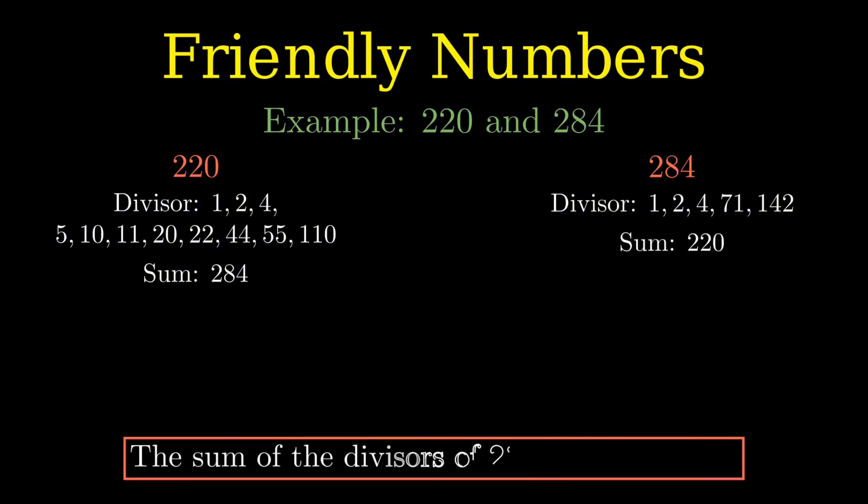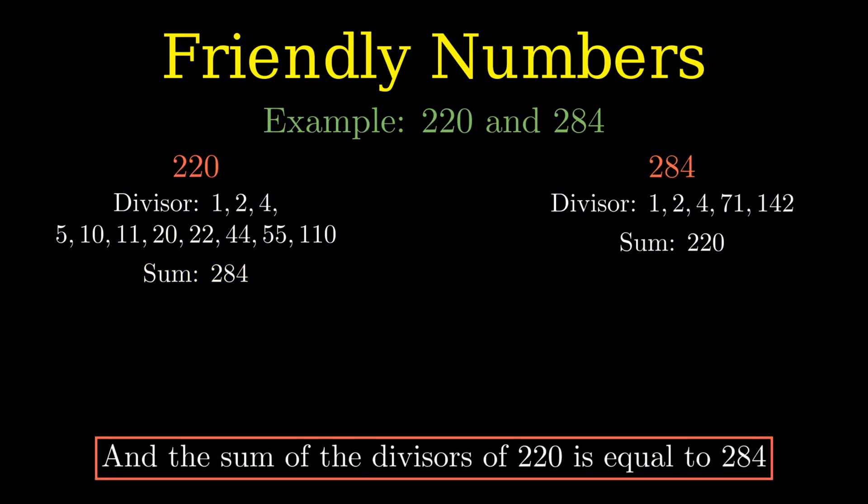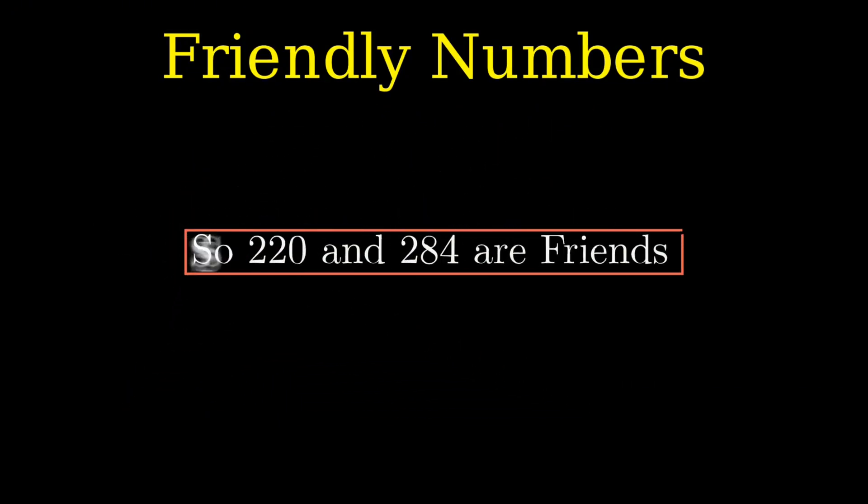Have you noticed something? The sum of the divisors of 284 equals 220, and the sum of the divisors of 220 equals 284. These numbers are perfectly matched, making them a friendly pair. And there you have it: 220 and 284 are truly friendly numbers.